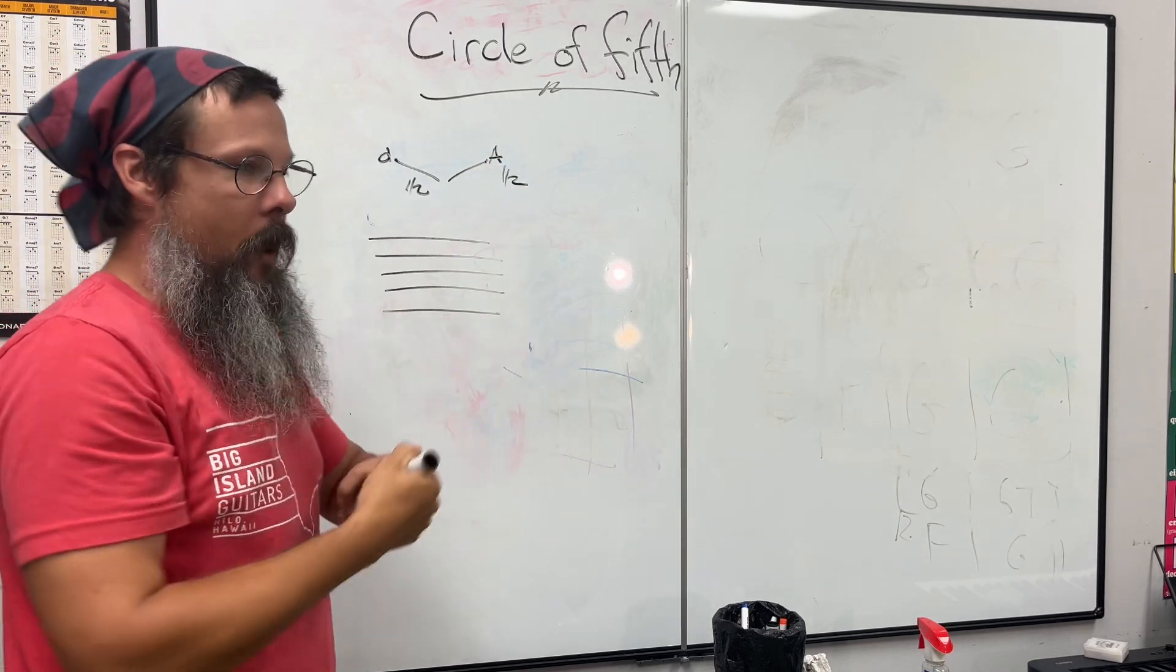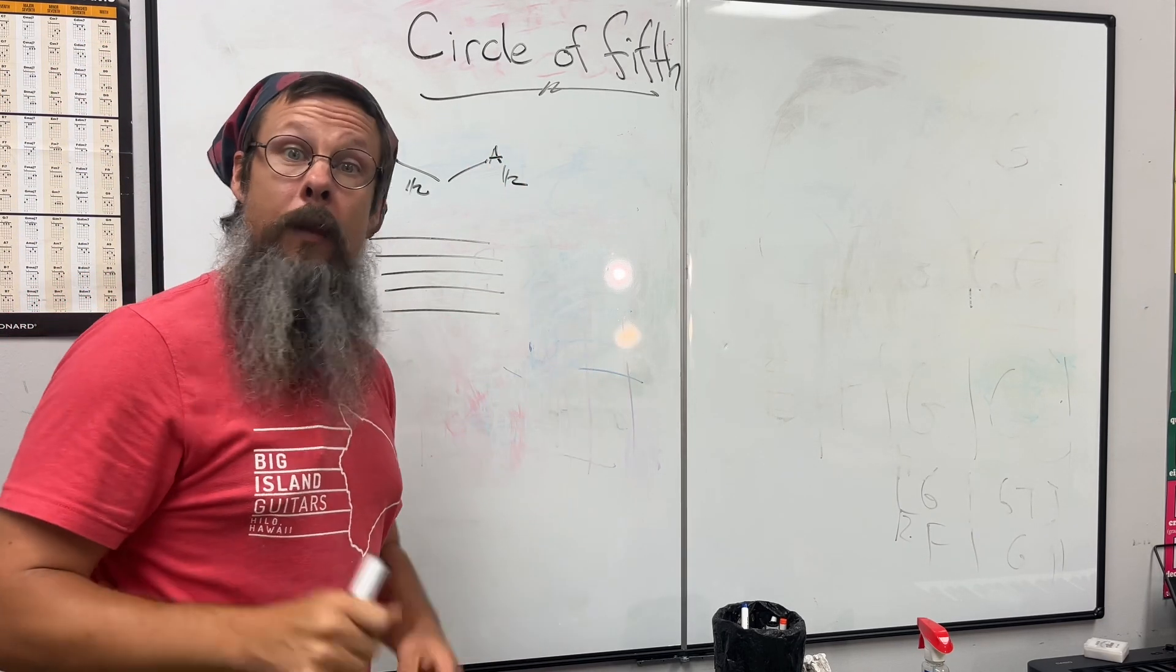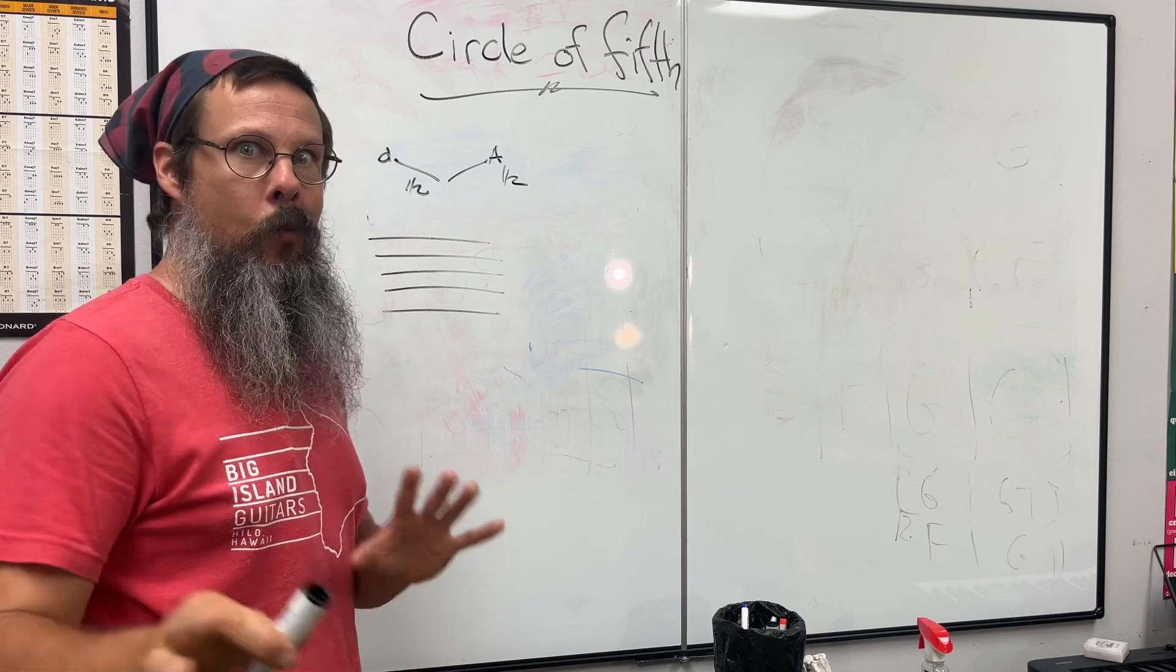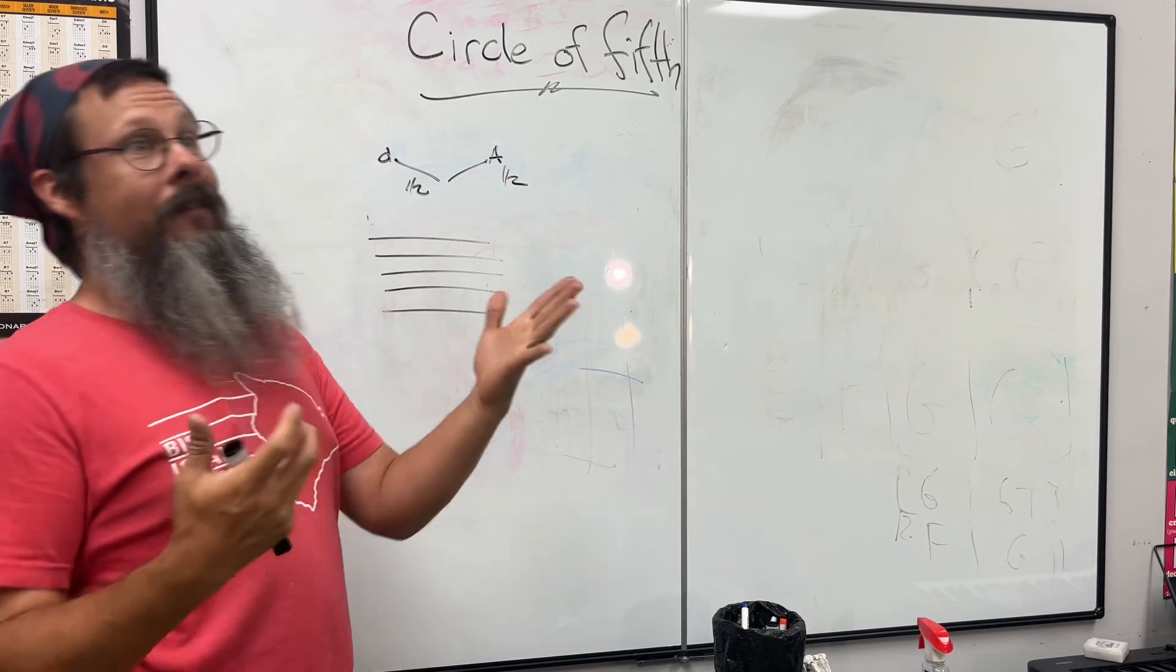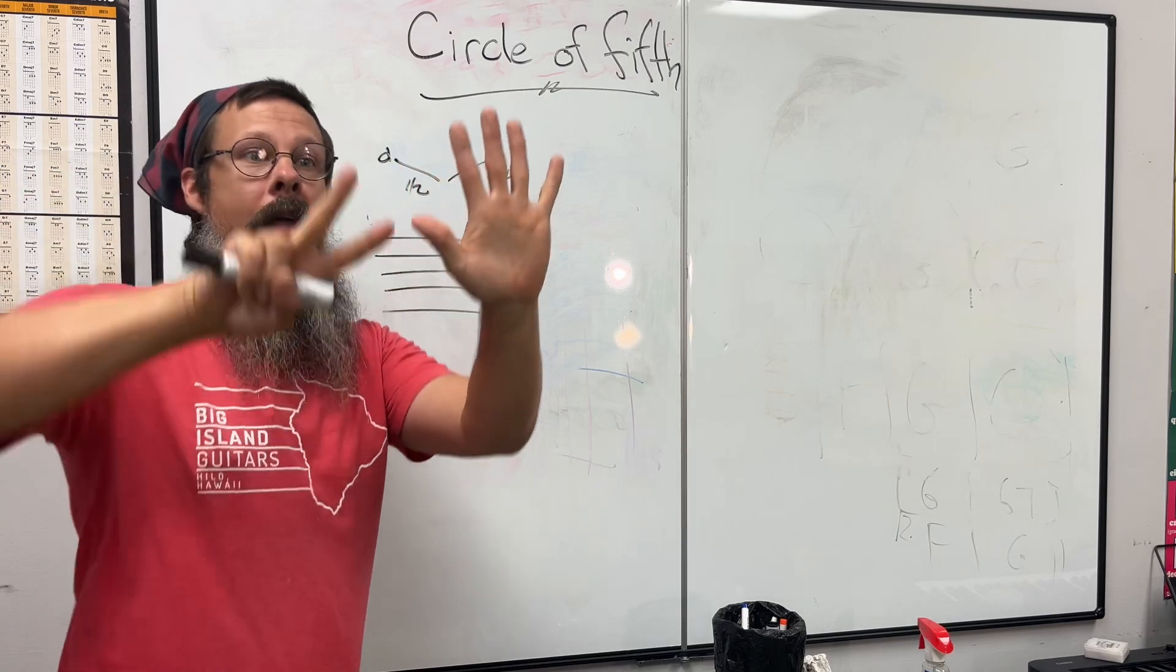Then go through and say, where's my G? G has one sharp - put the F sharp right in front of it. When you do that you can memorize it in your head. The reason why I'm not writing it is because I want you to go back to that other video and watch that.